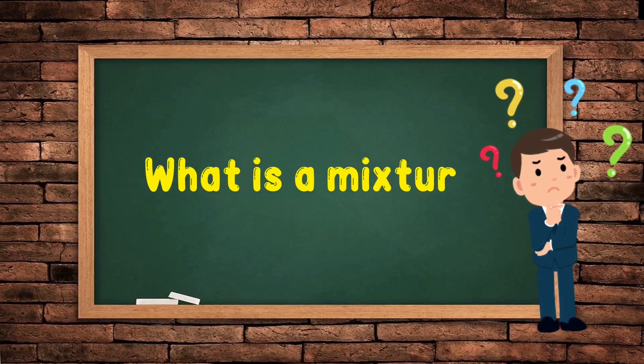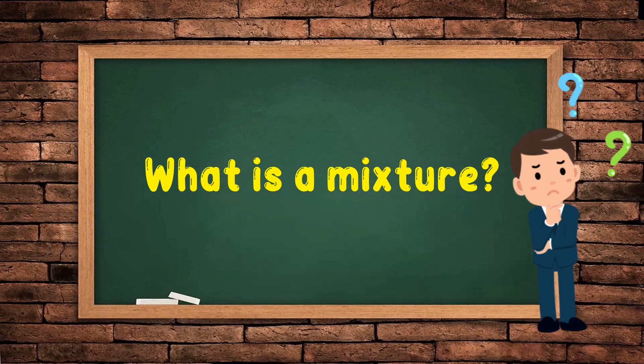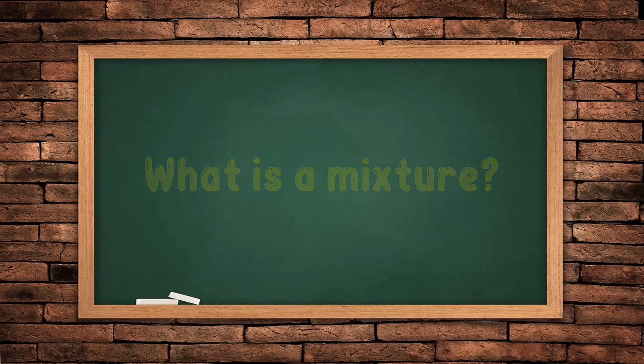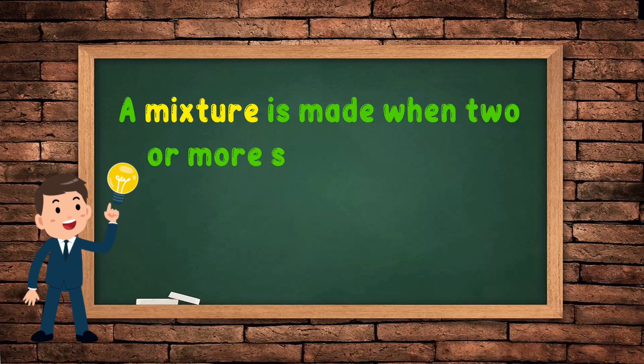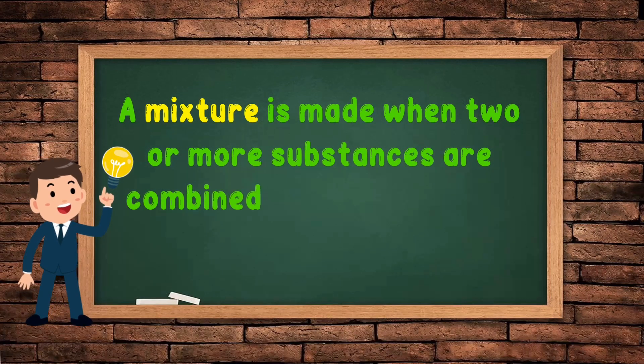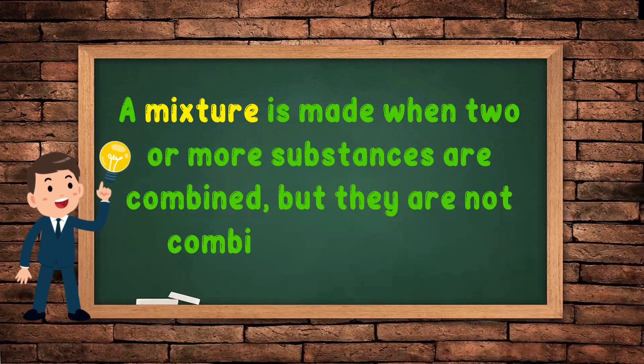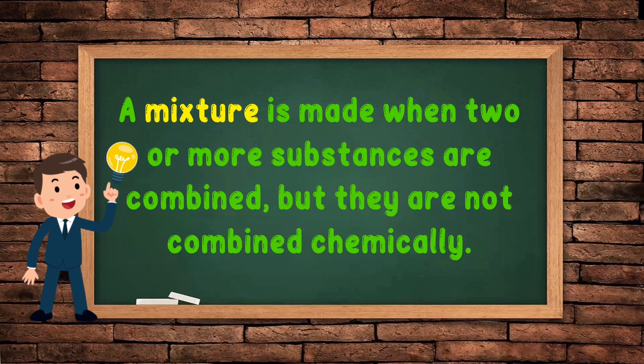What is a mixture? A mixture is made when two or more substances are combined, but they are not combined chemically.